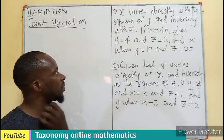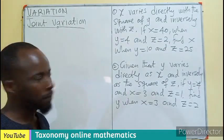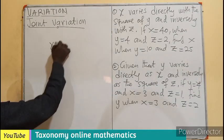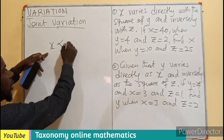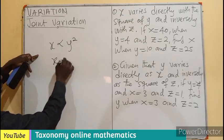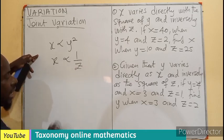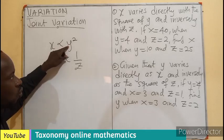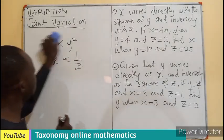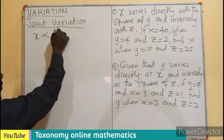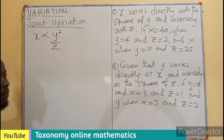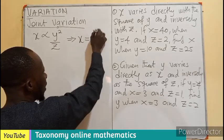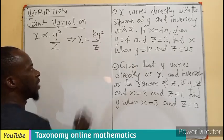Question one: X varies directly with the square of Y and inversely with Z. We can see that X is varying directly as the square of Y, and X is also varying as the inverse of Z. Combining this to use one constant of variation, we have Y squared multiplying one over Z to become X varies directly as Y squared divided by Z. In this case, we translate it to become X equals K times Y squared divided by Z.